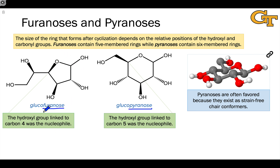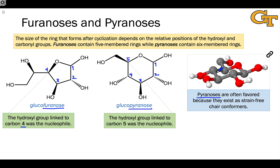To form the glucofuranose, the hydroxyl group linked to carbon-4 was used in the cyclization, whereas to create the pyranose, the six-membered ring, the hydroxyl group linked to carbon-5 was used. Pyranoses are quite often the favored forms of cyclic monosaccharides because of their tendency to exist as chair-like structures. Notice the strain-free chair-like structure of the pyranose in this three-dimensional model.